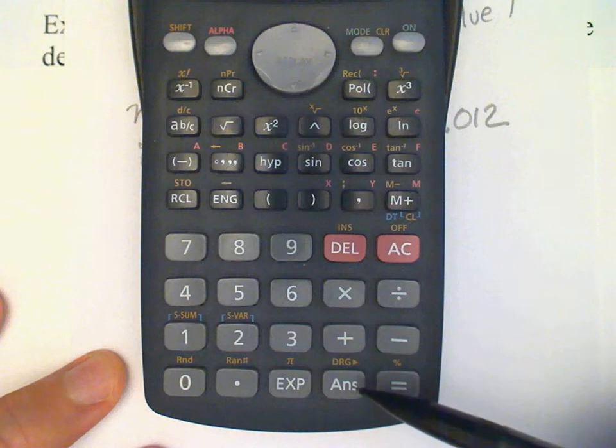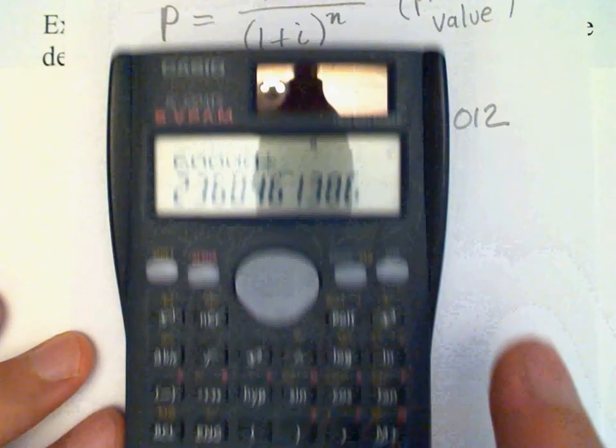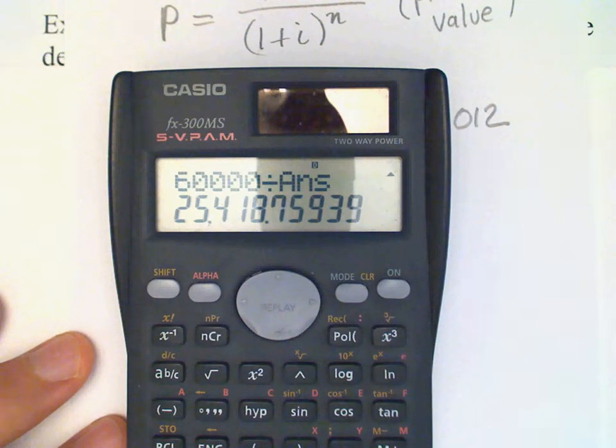That answer button pulls back the last answer that I had. So I'm going to press answer, divided by answer, equals. And my new answer is 25,418.76.